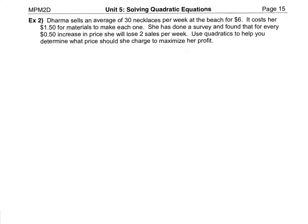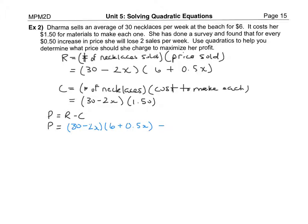All right, so Dharma is selling an average of 30 necklaces per week at the beach for $6. $1.50 in materials is her cost to make each one. She's done a survey for every 50 cent increase in price. She's going to lose two sales per week and we're going to find out what she should charge to maximize her profit there. I'm just going to put on the screen here what we had figured out so far.